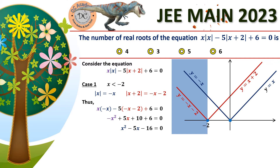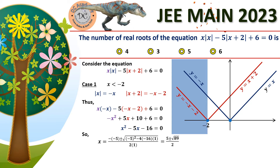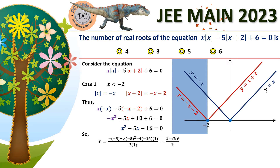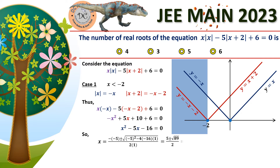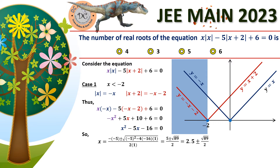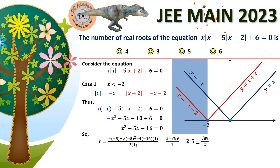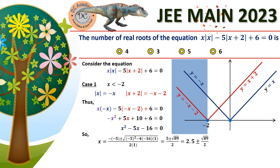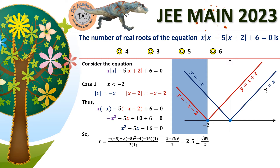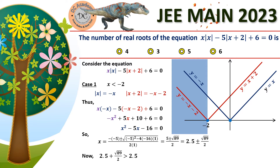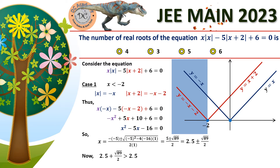Using the quadratic formula on x² − 5x − 16 = 0, we get x = (2.5 ± √89) / 2. We now need to check whether these roots lie inside the interval (−∞, −2). Without a calculator, we estimate: since 81 < 89 < 100, we have 9 < √89 < 10, so √89/2 lies between 4.5 and 5.